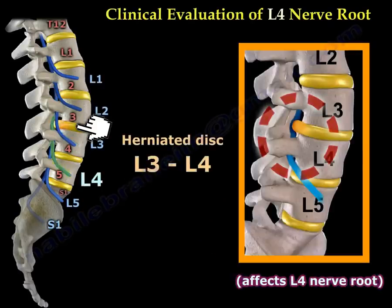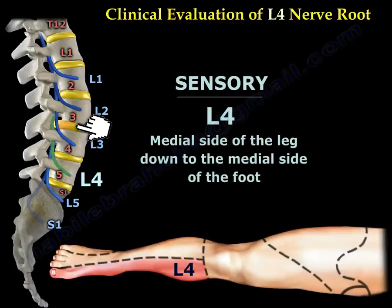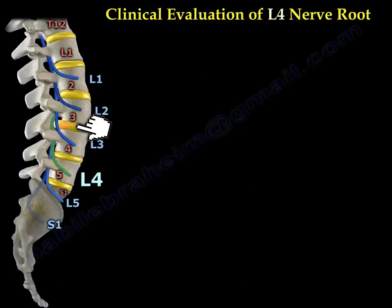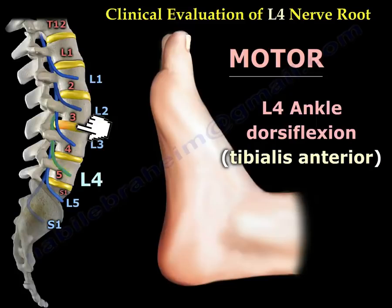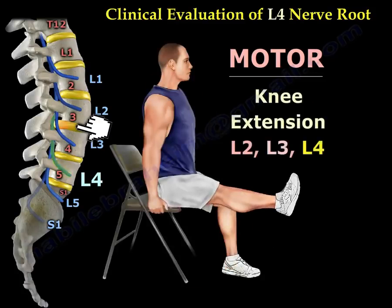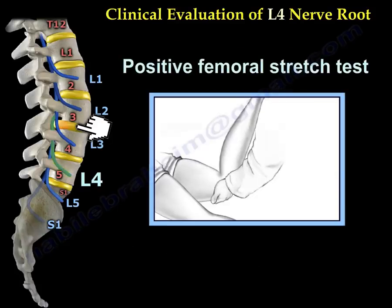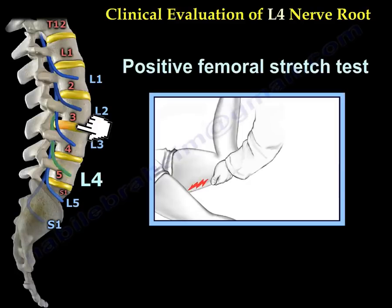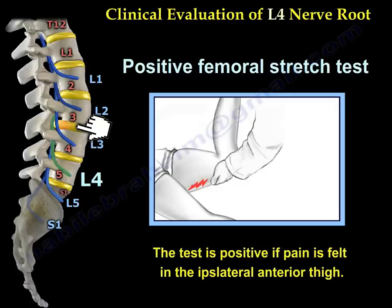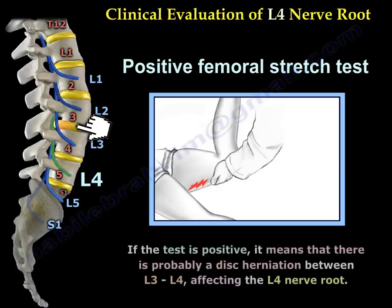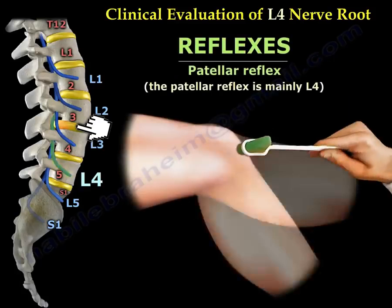A herniated disc between L3 and L4 will affect the L4 nerve root. The sensation of L4 is on the medial side of the leg down to the medial side of the foot, as illustrated in this diagram. The L4 motor involves ankle dorsiflexion — we usually test the tibialis anterior — and knee extension. A positive femoral stretch test can also be seen in L4 nerve root involvement; the test is positive if pain is felt in the ipsilateral anterior thigh, suggesting disc herniation between L3 and L4. The patellar reflex is mainly L4.